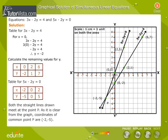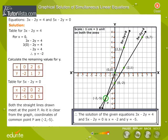Can you see that both the straight lines drawn meet at the point P? As it is clear from the graph, coordinates of common point P are minus 2, minus 5. Therefore, solution of the given equation is x is equal to minus 2 and y is equal to minus 5.